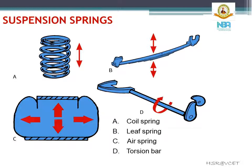Under rubber springs, the types are compression springs, compression shear springs, steel reinforced springs, progressive springs, and face shear springs. Under air springs, there are bellows type air springs and piston type air springs. We will look into the four different types of steel springs: leaf springs, coil springs, torsion bars, and others.